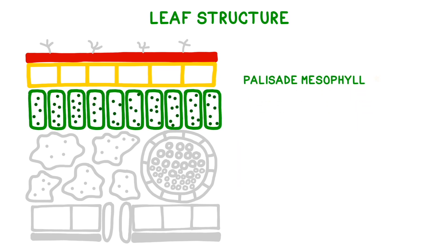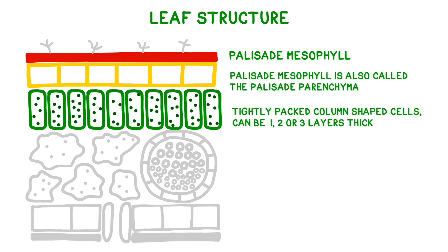The next layer is called the palisade mesophyll, sometimes called the palisade parenchyma. Palisade mesophyll cells are tightly packed together and column-shaped. Because this is the major site of photosynthesis, they are full of chloroplasts, and there are often several layers of this type of cell.